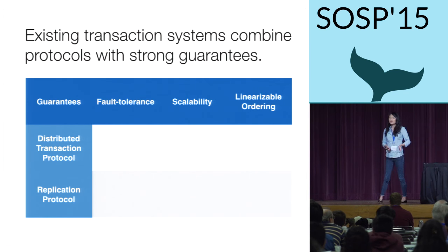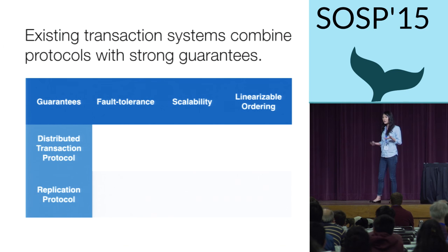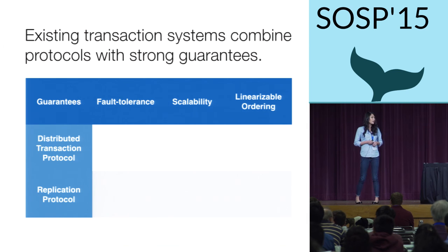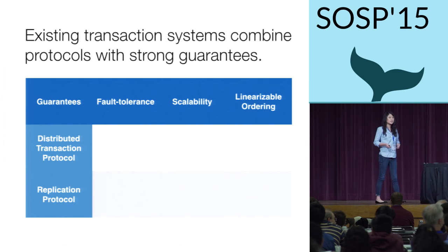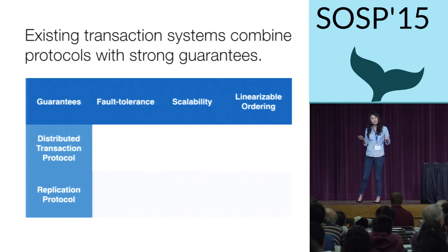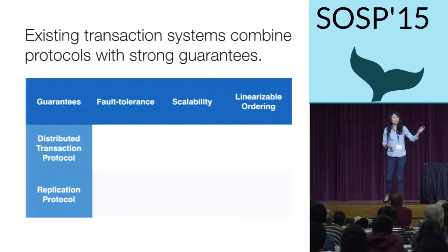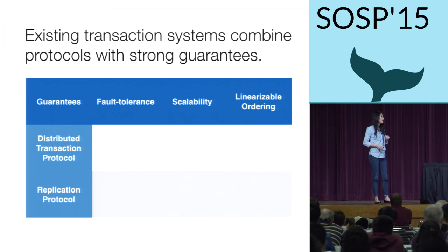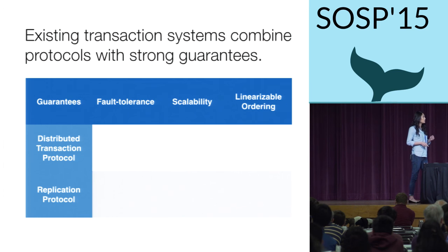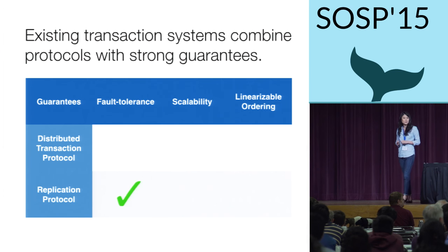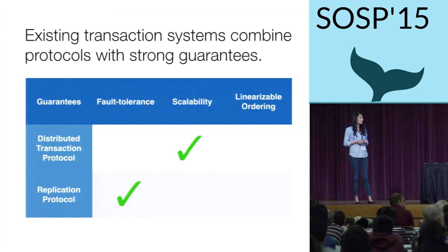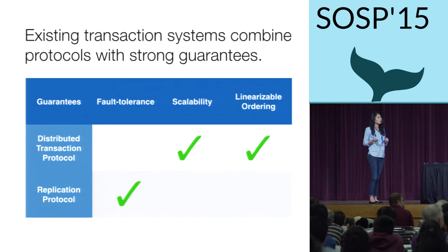Existing transactional storage systems generally want to support three high-level guarantees: fault tolerance for application data, the ability to scale up as data grows, and a linearizable ordering for transactions. The typical system today divides the responsibilities for these guarantees between two layers. The replication layer provides fault tolerance, and the distributed transaction protocol provides scalability and enforces that linearizable transaction ordering.